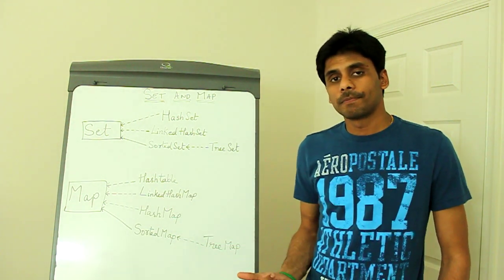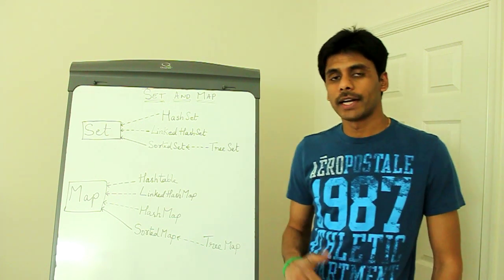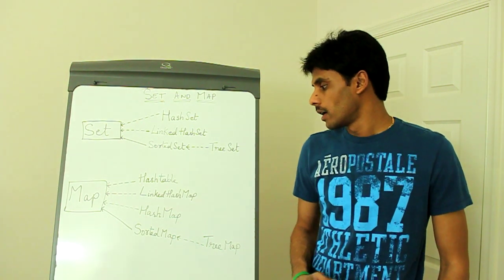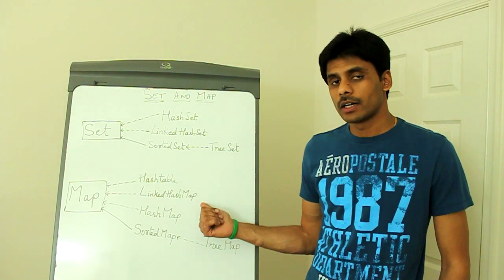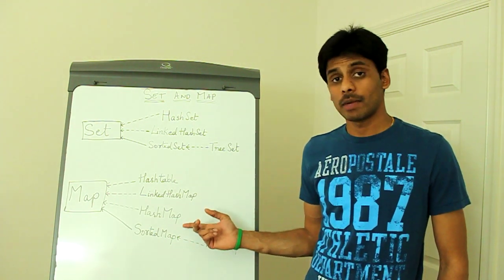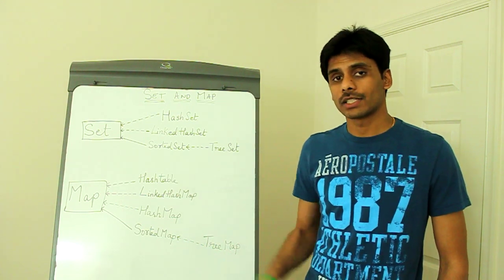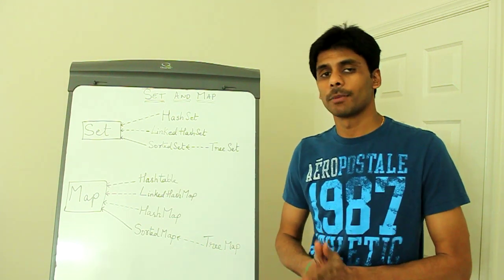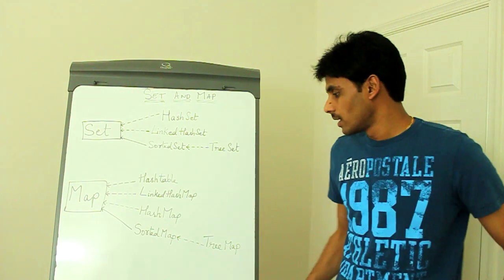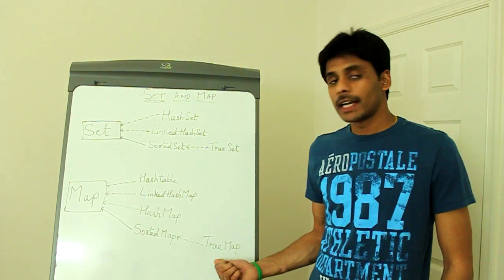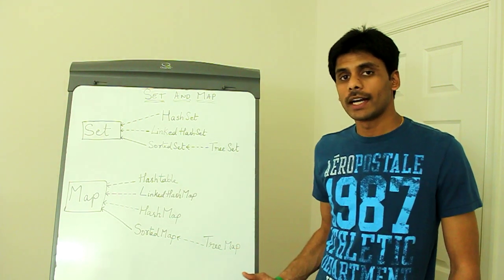Under Map, HashMap stores key-value pairs using the hashCode method to store and retrieve objects. LinkedHashMap maintains insertion order whereas HashMap doesn't. Hashtable is a legacy class like Vector — don't use it. TreeMap, like TreeSet, is a sorted map.